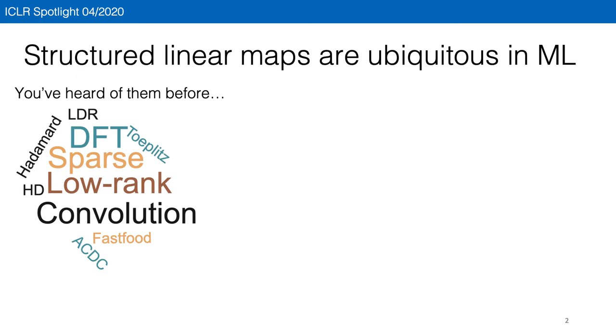For example, low rank and sparse matrices are commonly used to design compact machine learning models, and the discrete Fourier transform is used in speech preprocessing and convolution in image modeling. These structural linear maps are so useful because they have fast multiplication algorithms and few parameters.